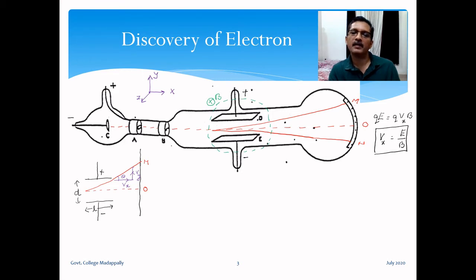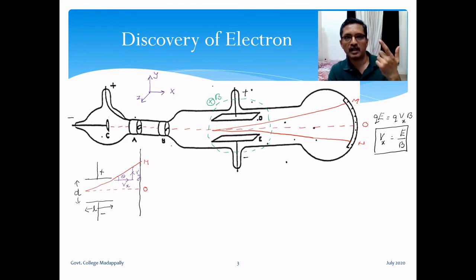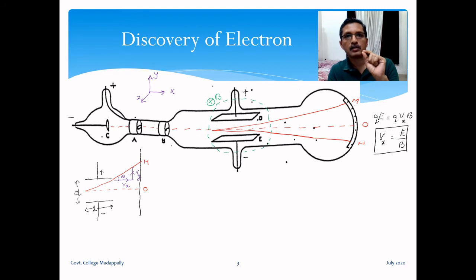This way of measuring velocity — applying crossed electric and magnetic fields and tuning them until the beam is undeflected — is a particular technique called the velocity selector. Thomson was the first person to employ this technique.